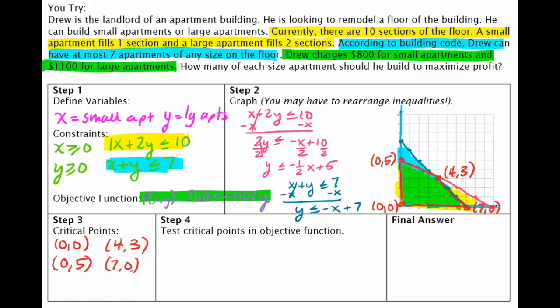And now the last thing I need to do is test my critical points. And this is going to tell me my final answer. So I'm going to take my objective function, which is highlighted in green in that first box, and I'm going to plug in all of these x and y values and see which one gives me the biggest number because I'm looking to maximize profit.